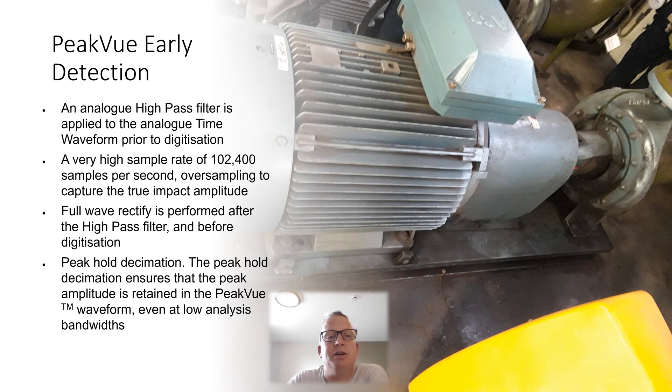Very basically we've got analog high-pass filter applied to the analog time waveform, part of digitalization. The bit which sets them apart is where it actually has a sample rate of 102,400. So the analyzer is sampling so fast that it's going to capture these very short transient minute shock pulses from the bearing. Very short pulse, short duration, really high frequency, they're sampling really fast to capture it. Then they rectify it, digitize it, peak hold decimation, which is where the name PeakVue comes from, where it holds a peak value and ensures the peak value is retained and it gives you some really crisp clear data.